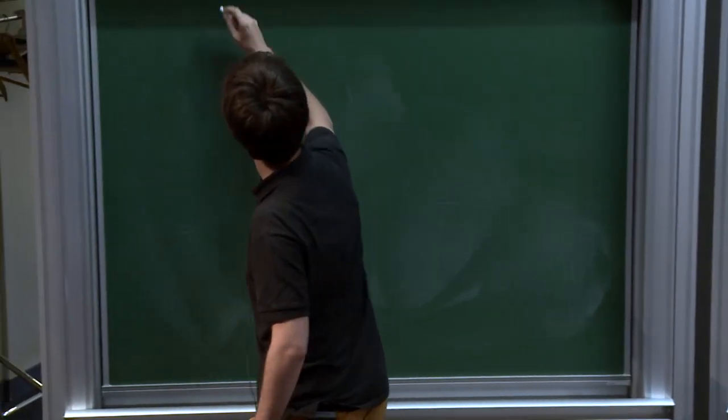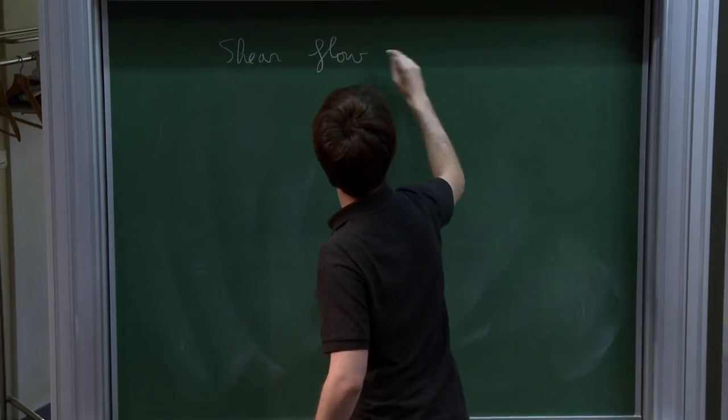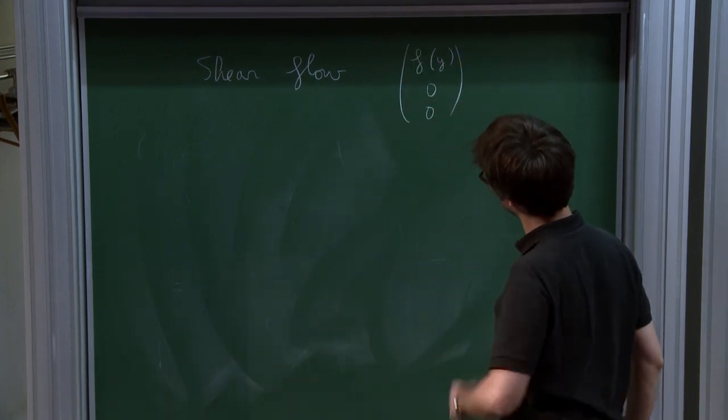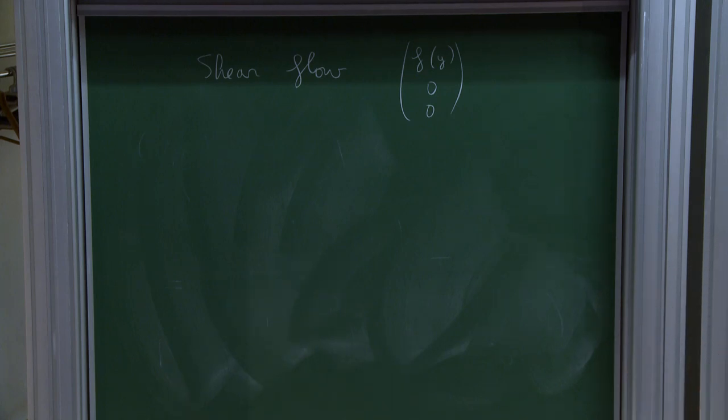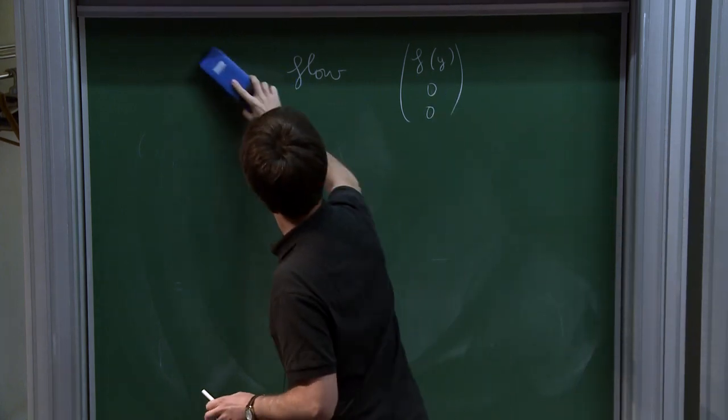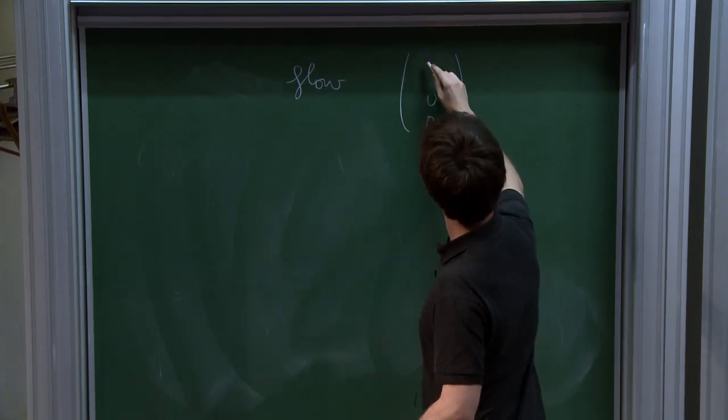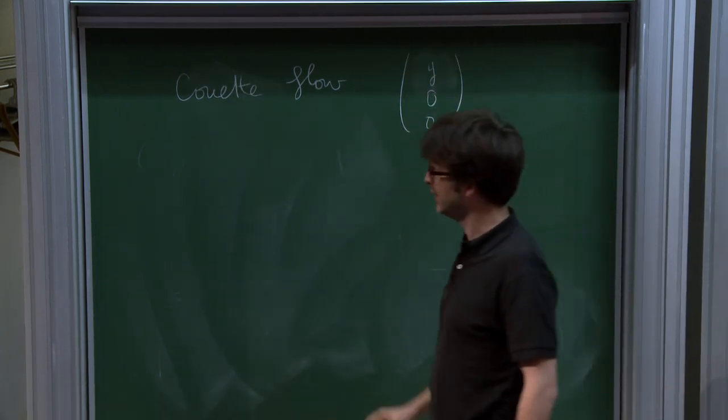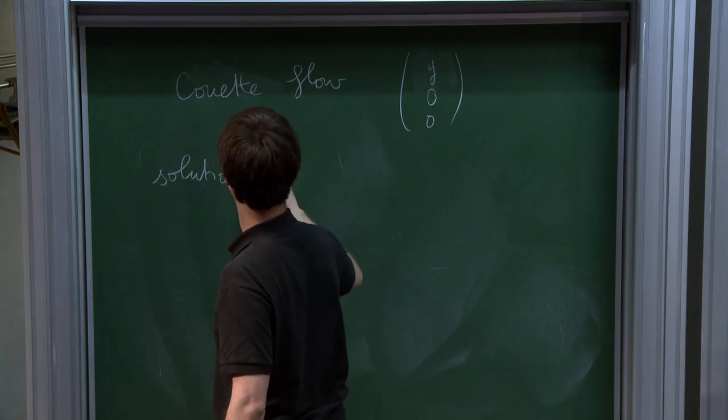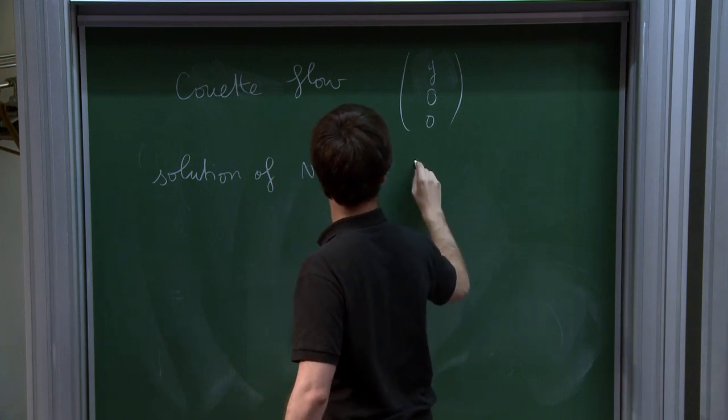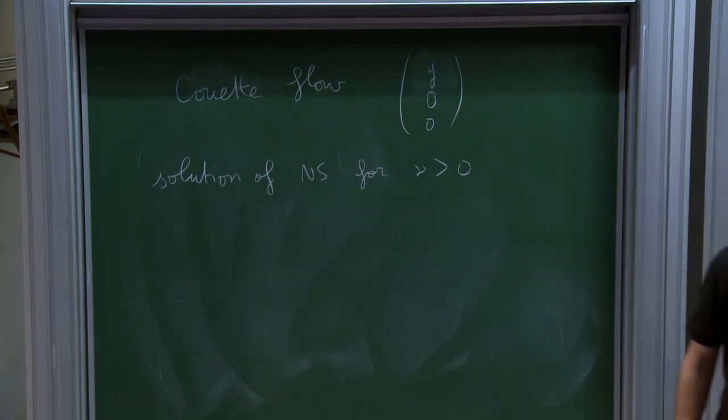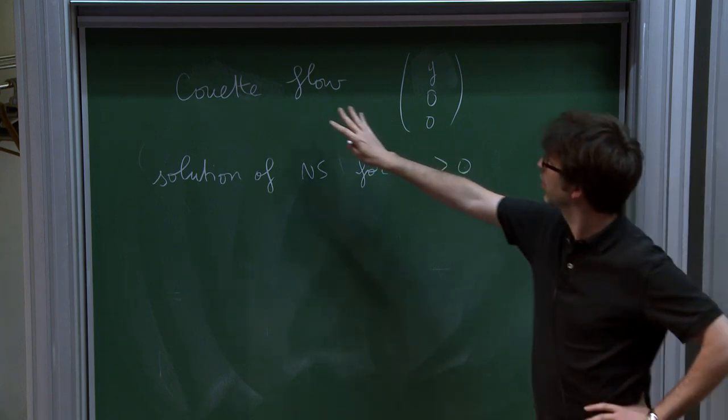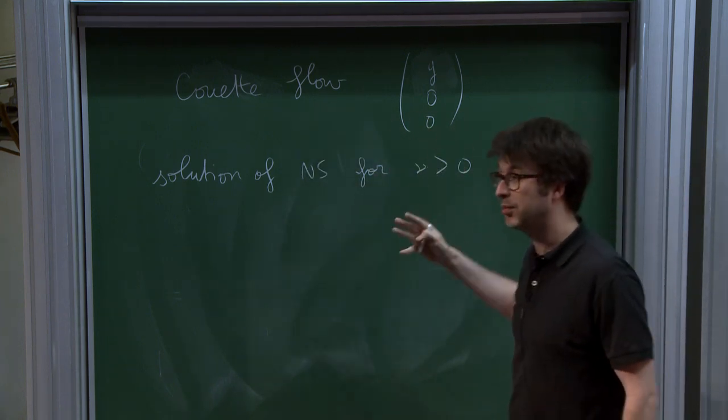So what is a shear flow? A shear flow is a flow of the type, say f of y, 0, 0. And the particular flow that I want to look at is the Couette flow, where f is just a linear function. So you have y, 0, 0. This is the Couette flow. And this is a solution of Navier-Stokes for any nu positive. So the stability of shear flows in general is a difficult question. And what we discussed today is the stability of this particular shear flow, which is simpler for reasons that we will see.